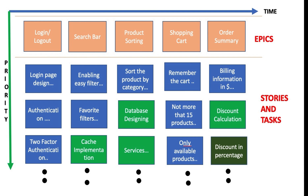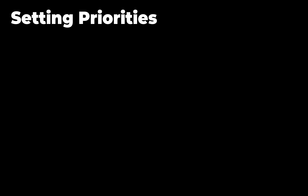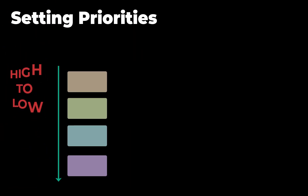Firstly, priority setting. Creation of user story maps helps in arranging the stories into a prioritized work log. Priority tickets are arranged vertically such that the highest priority is always on the top.